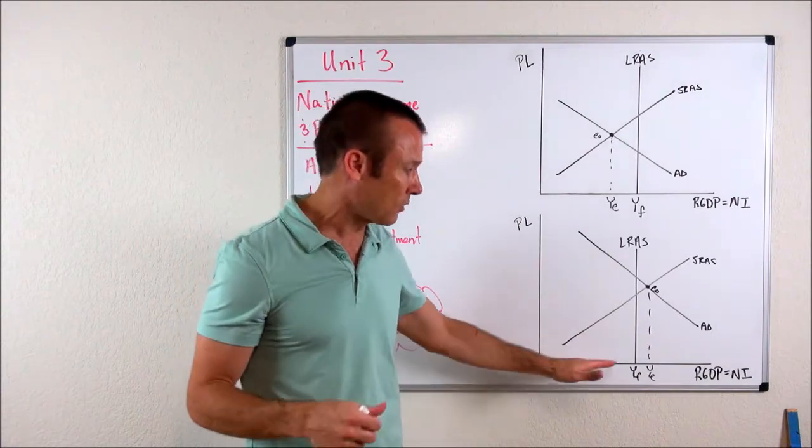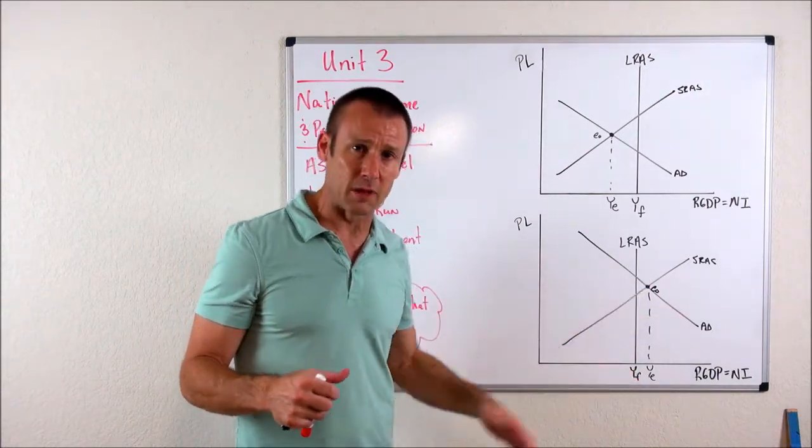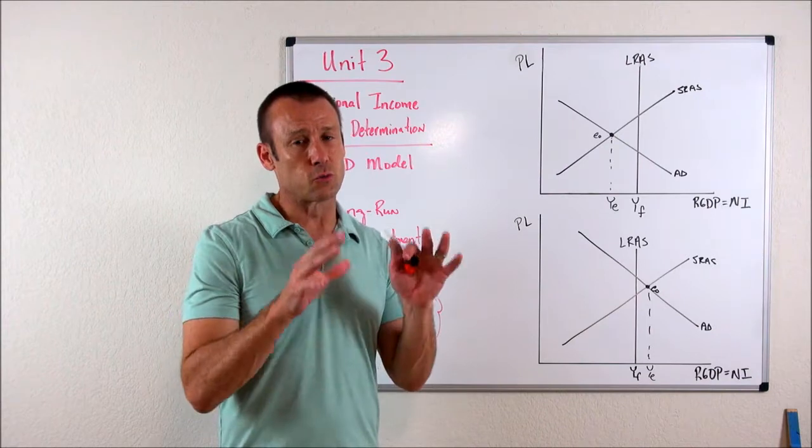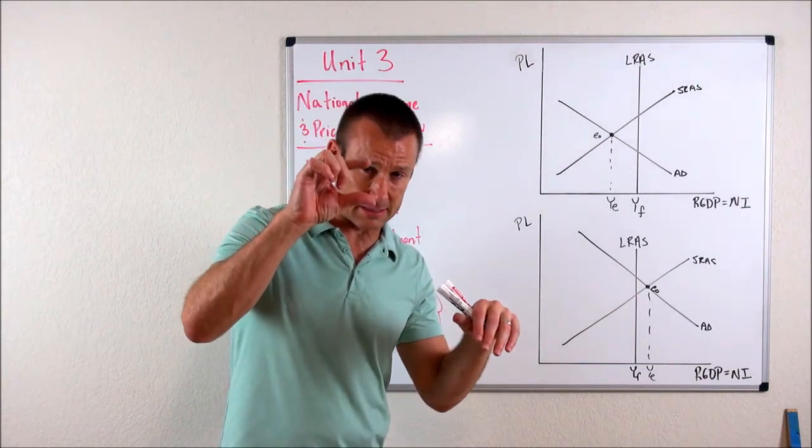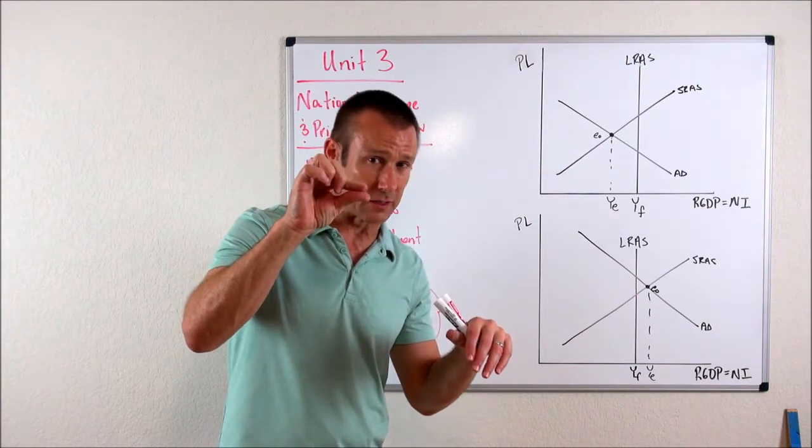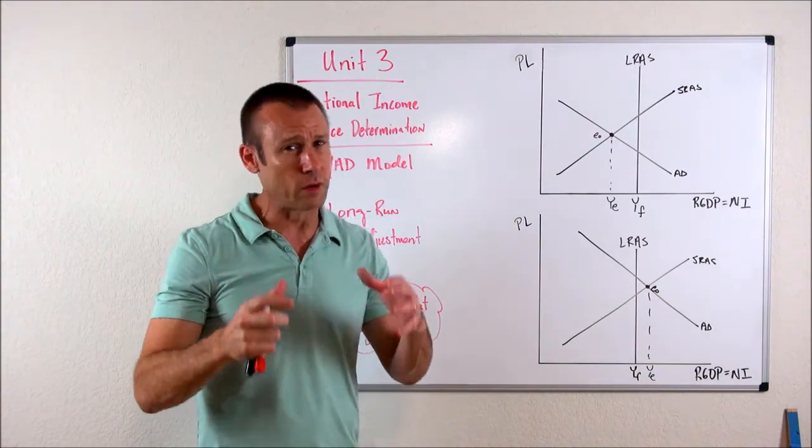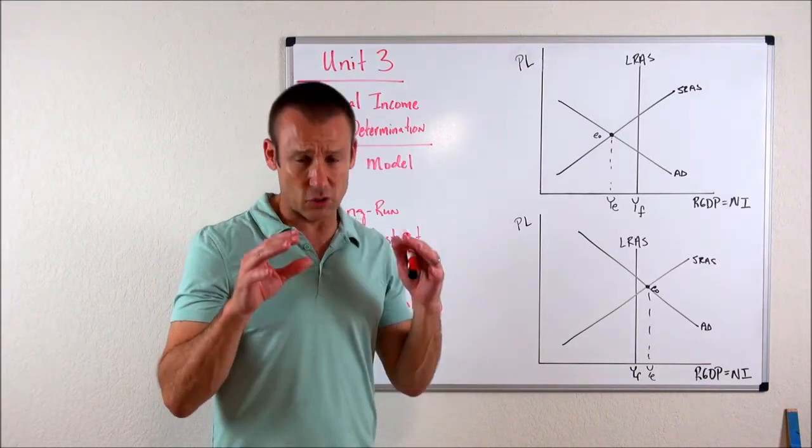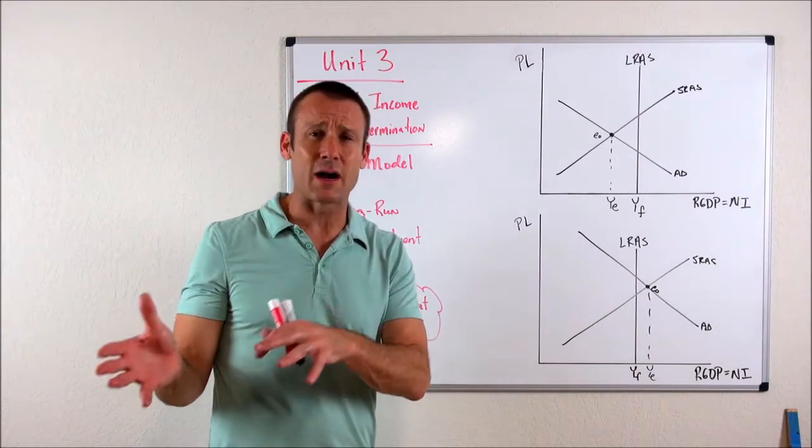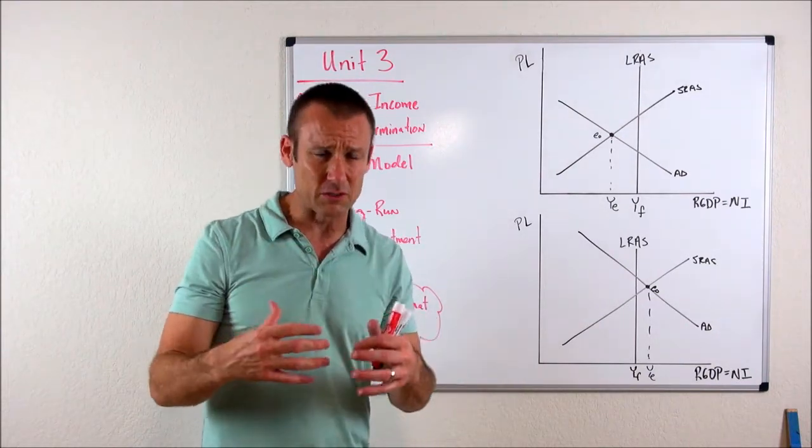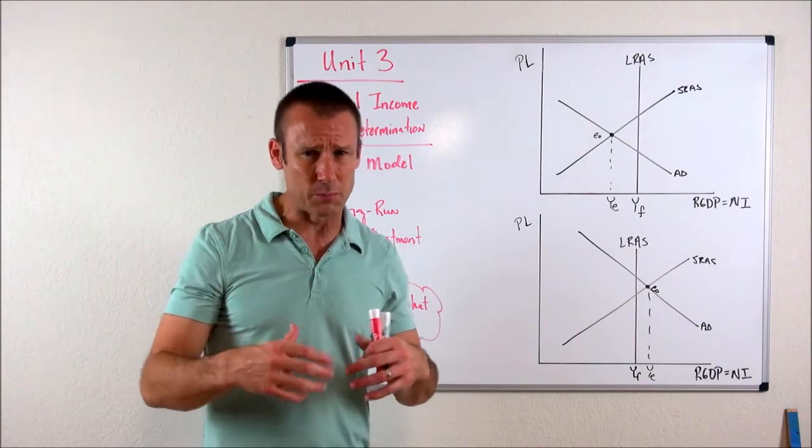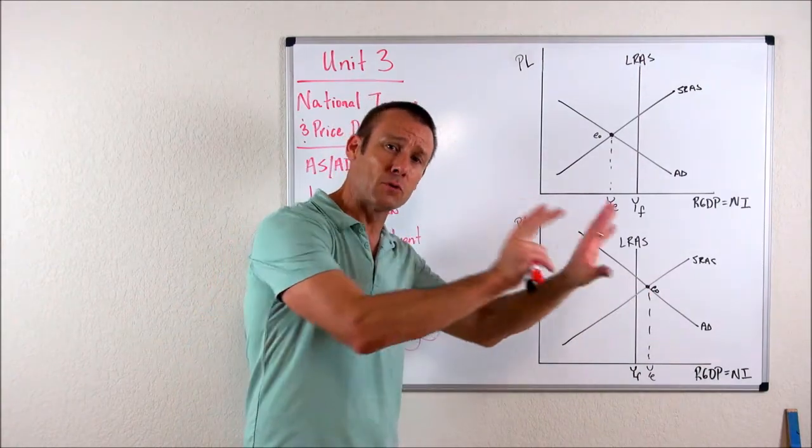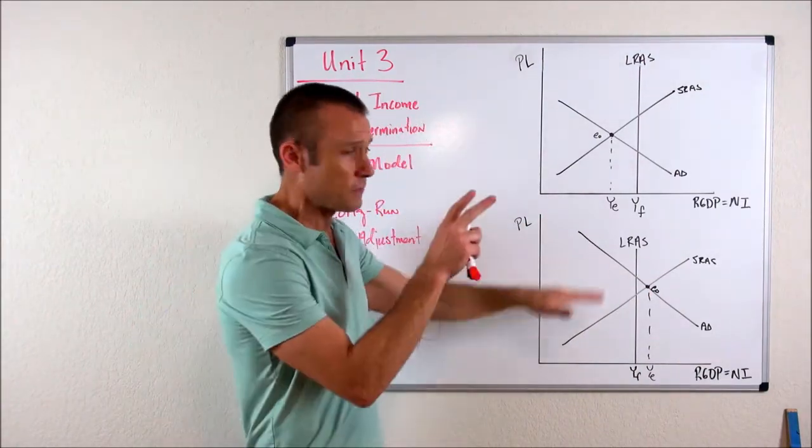And just by the way, how can an economy produce to the right of full employment level output in the short run? By dipping into the frictionally and structurally unemployed. There's ways that we can get the frictional unemployment rate to kind of decrease a little bit. It'll never get to zero, but decrease a little bit. People try to quit, we can say, hey, don't quit. I'll give you a bonus if you stay. And there's other ways to reduce the frictional in the short run. We can hire people who don't have the skills and train them ourselves when we're really booming and desperate for labor. So in the short run, we can produce more than YF.